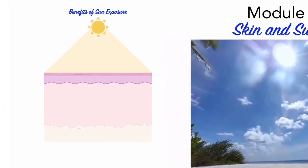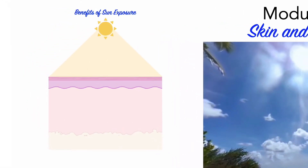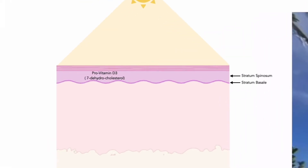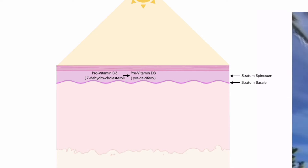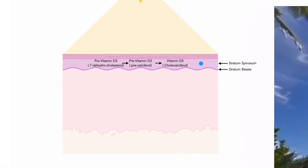When exposed to UV radiation, epidermal cells in the stratum spinosum and stratum basale convert a cholesterol-related steroid called provitamin D3, or 7-dehydrocholesterol, into pre-vitamin D3. This chemical quickly isomerizes into vitamin D3, or cholecalciferol.